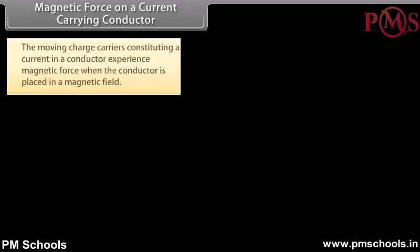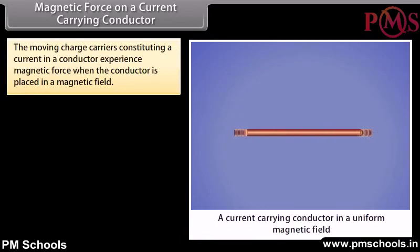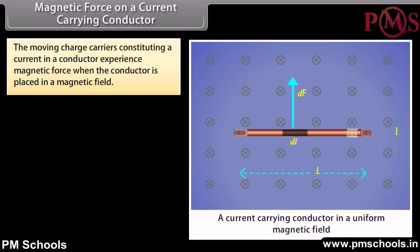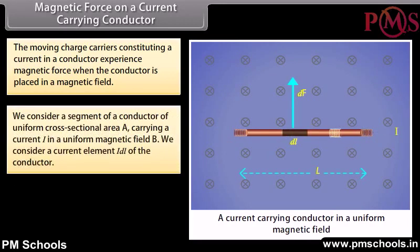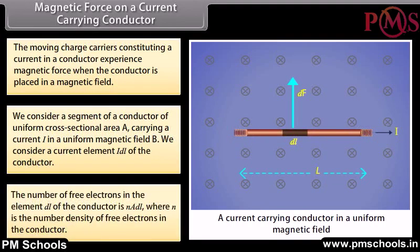Magnetic force on a current carrying conductor: The moving charge carriers constituting a current in a conductor experience magnetic force when the conductor is placed in a magnetic field. We consider a segment of a conductor of uniform cross-sectional area A carrying a current I in a uniform magnetic field B. We consider a current element I·dL of the conductor. The number of free electrons in the element dL is n·A·dL, where n is the number density of free electrons.